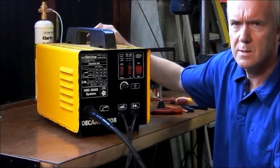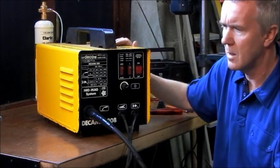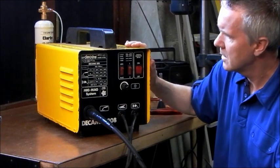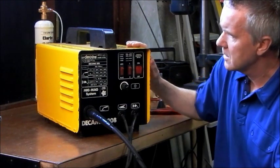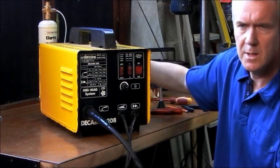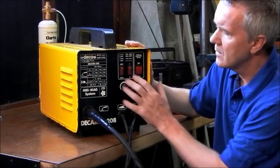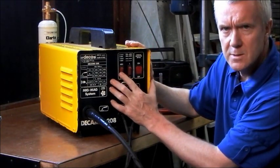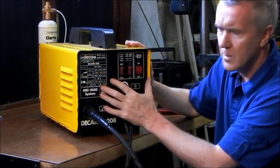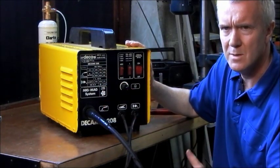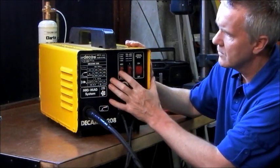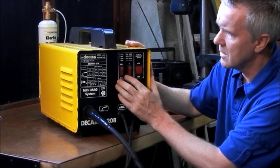Now we have the gas and the wire installed, so we have the consumables on it. So now I'm going to show you how to actually set it up. There's four voltage settings on this machine, 30 amp to 120 amp. They're all around that on these basic models.